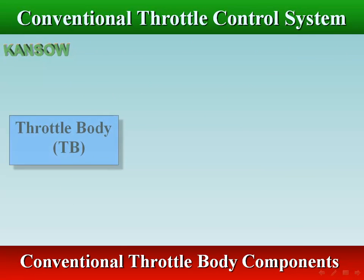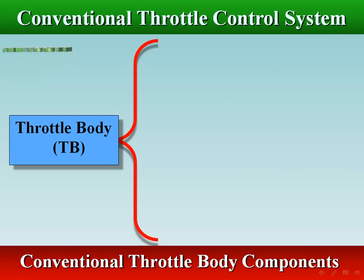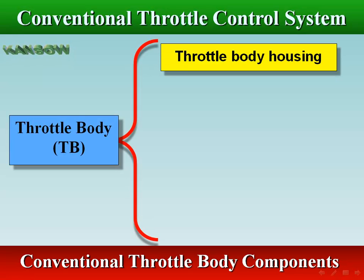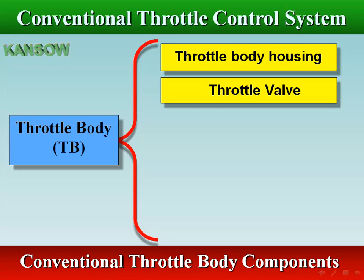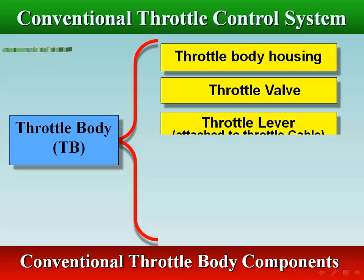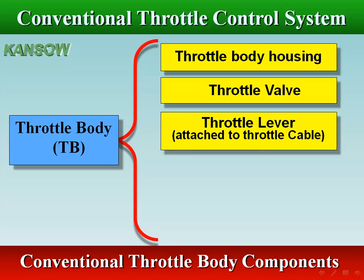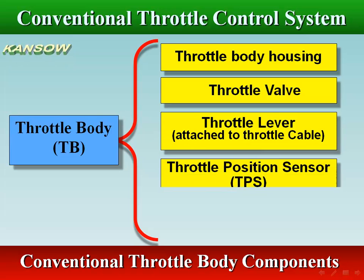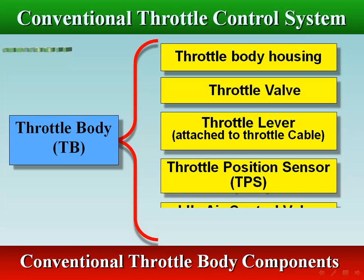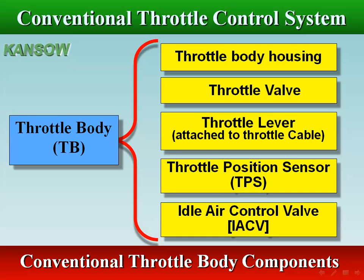The throttle body (TB) contains throttle body housing, throttle valve, throttle lever attached to the throttle cable, throttle position sensor (TPS), and idle air control valve (IACV).